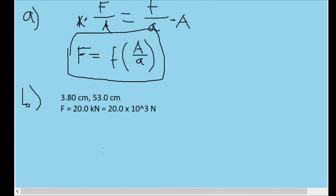Part B gives us the diameters of the pistons as 3.80 centimeters and 53.0 centimeters. We are also told that there is a 20.0 kilonewton force acting down on the large piston. We are to find the force on the small piston needed to balance out the hydraulic lever and make it stationary.